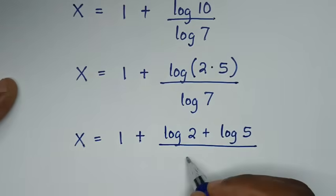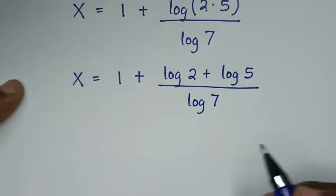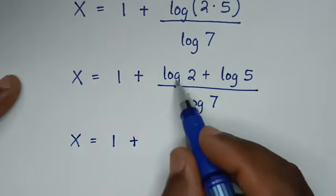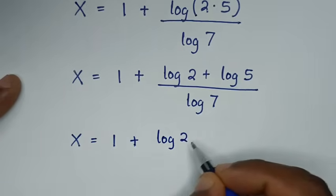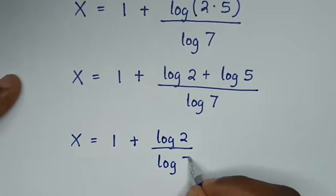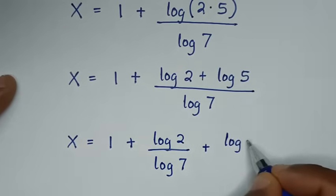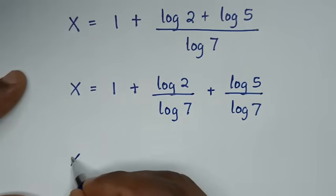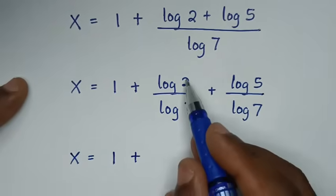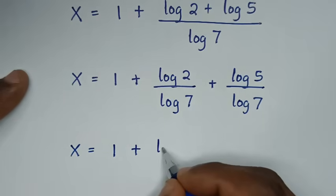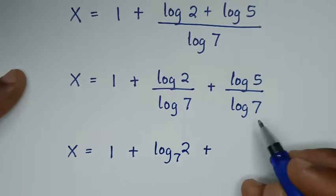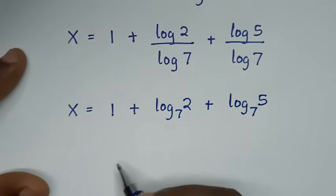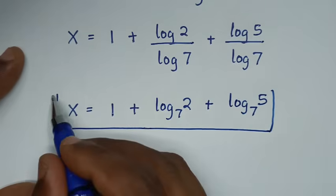Then over log of 7. In the next step, x is equal to 1 plus, dividing by log of 7, it will be log of 2 over log of 7 plus log of 5 over log of 7. Log of 2 over log of 7 is the same as log base 7 of 2, plus log of 5 over log of 7 is the same as log base 7 of 5. So the final answer for x is 1 plus log base 7 of 2 plus log base 7 of 5.